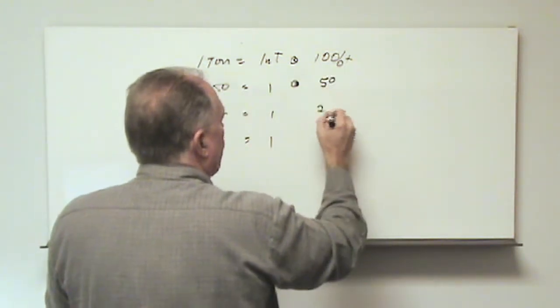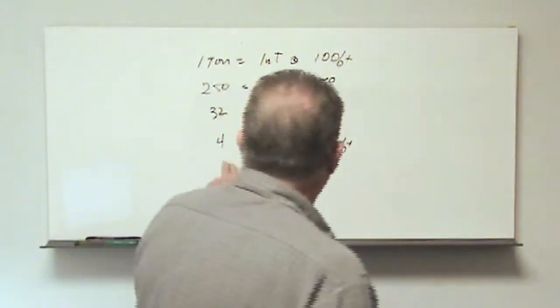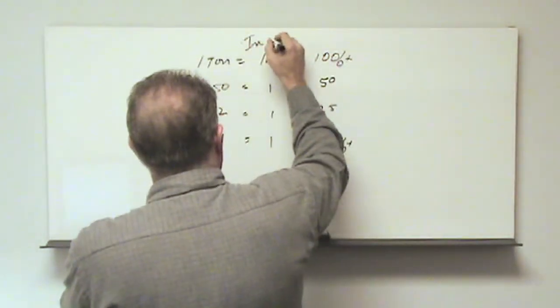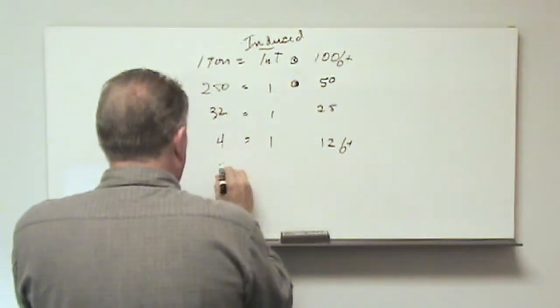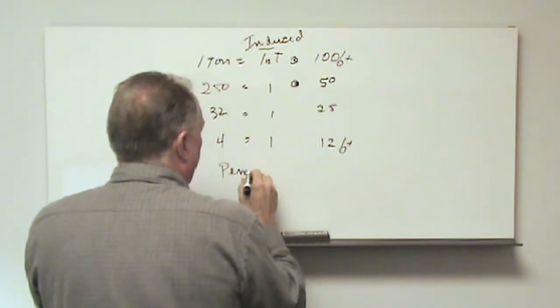And these distances would halve. So 50 feet, 25 feet, 12 feet. Now, remember though that we have multipliers. And our multipliers, this is purely induced. We have multipliers. We have perm, permanent magnetic effect.